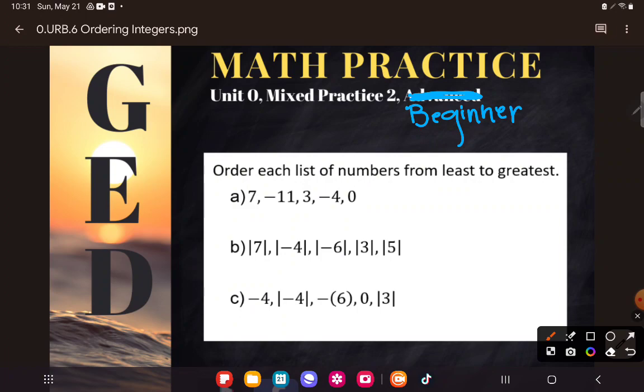But it says order each list of numbers from least to greatest. Definitely you might see a problem on the non-calculator section that asks you to order a list of numbers. The likelihood is when you order a list of numbers, you're going to see a mix of decimals and fractions. And there could even be some negatives in there. I don't expect you to necessarily see absolute value bars in those problems, but we're just going to kind of flex two muscles at once.